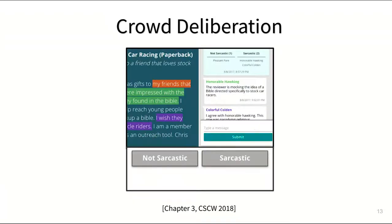So we gave groups an incentive by telling them there is a correct answer. And if you find it and agree on it as a group, each of you will get an extra bonus payment. But in order not to have workers simply coordinate an agreement among themselves to get that bonus, we gave them a third option.